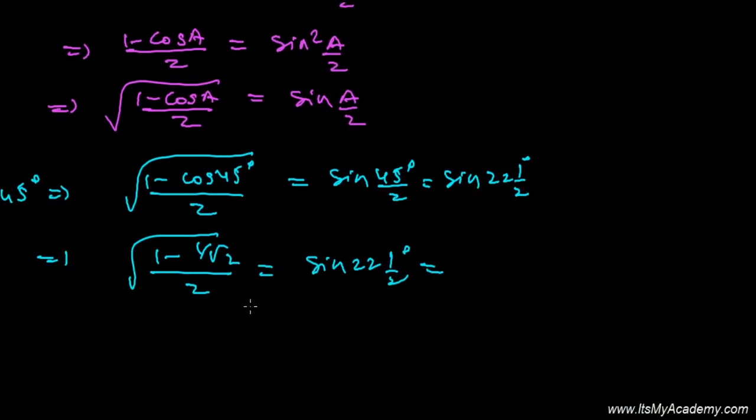From here, root 2 will multiply, so it will be root 2 minus 1 divided by 2 root 2. And these are all inside the square root, so that's the value of sine 22.5 degrees.